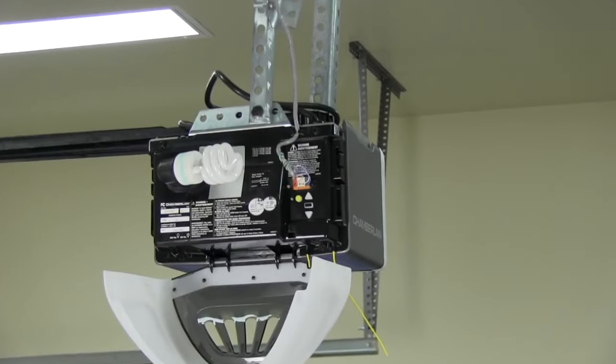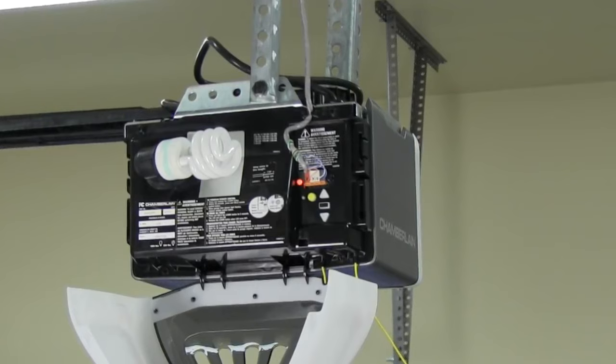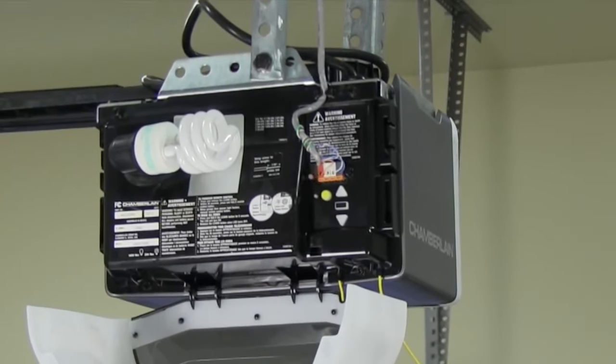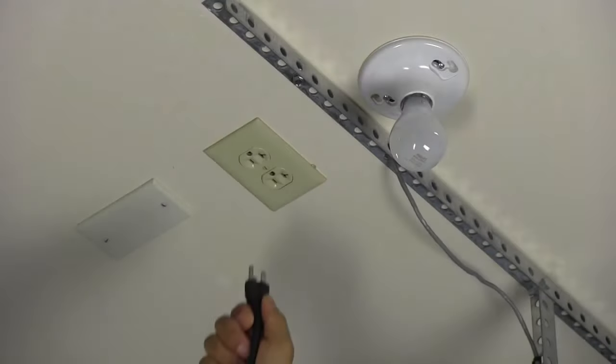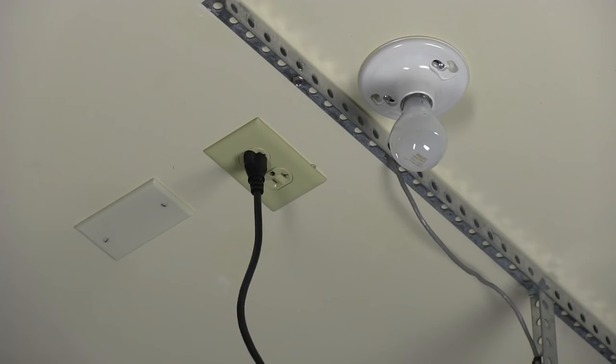The battery status LED will either glow solid orange, indicating the garage door opener is operating on battery power, or it will flash orange, indicating the battery is low. Plug in the garage door opener. The battery installation is now complete.